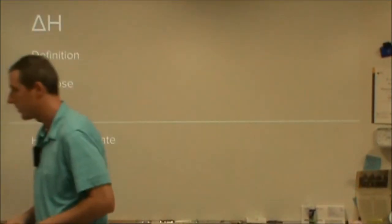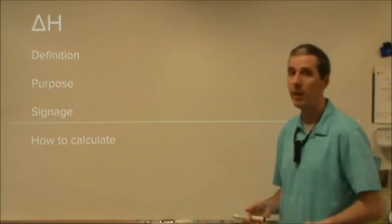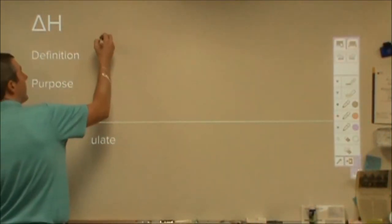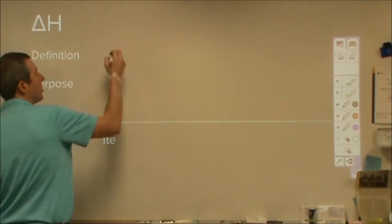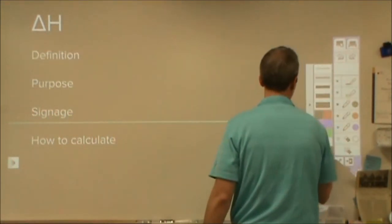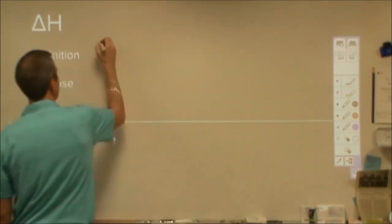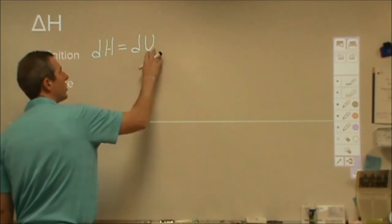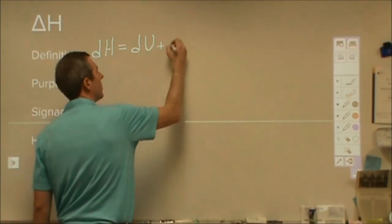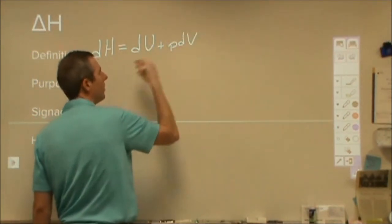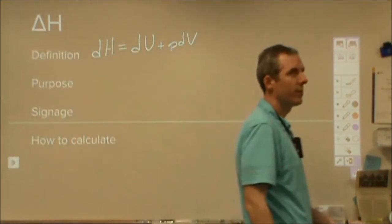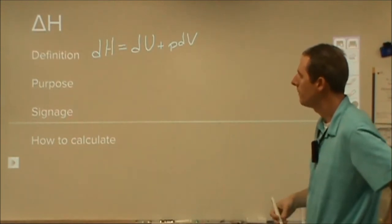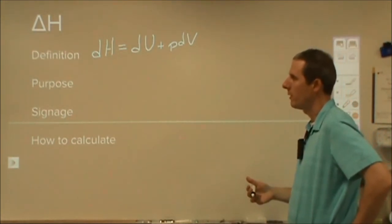We're going to start with delta H. Delta H is enthalpy. The change in enthalpy, dH, is equivalent to the differential of internal energy plus pressure times the differential of volume, assuming the pressure is constant externally — otherwise I would have a second term, Vdp. So this is what enthalpy is as a definition.